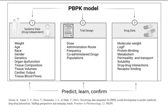Organs essential for ADME are included and defined by a differential equation. For deterministic organs of blood concentration profiles, such as the GIT, liver, and kidney, details of the mechanisms are considered. Additional tissues and organs can be added according to modeling purpose and hypothesis. System data inputs include weight, age, race, gender, genetics, organ dysfunction, tissue composition, tissue volume, cardiac output, and tissue blood flow. Trial design inputs include the drug's dose, administration route, frequency, co-administered drugs, and population. Drug data inputs include molecular weight, lipophilicity, protein binding, metabolism, permeability and transport, solubility, drug-drug interaction, and receptor binding.